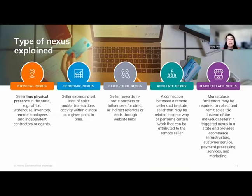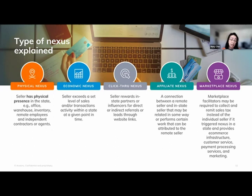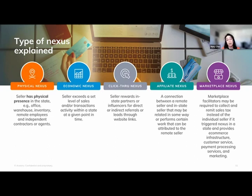There are five different types of nexus. Physical nexus is just what the term implies — you're physically in the state, for example having an employee, inventory, or temporarily being in the jurisdiction. One common confusion is people think that if they have an employee in the state but haven't exceeded the revenue or transaction threshold for economic nexus, they don't have nexus. Physical nexus is instant — the moment you have an employee in the state, you have a registration and filing requirement, regardless of whether you reached the economic nexus threshold.